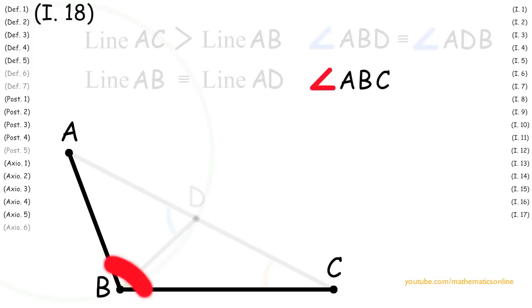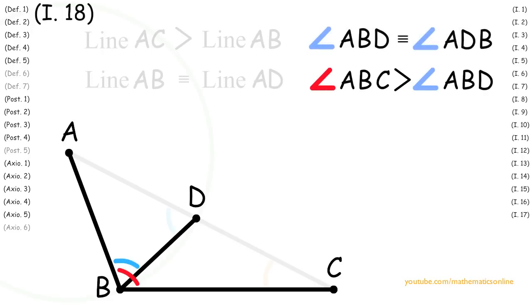Next, looking at angle ABC, by Axiom 5 it is greater than angle ABD. Since we also have that angle ABD is congruent to angle ADB, then by Axiom 5, angle ABC is greater than angle ADB.